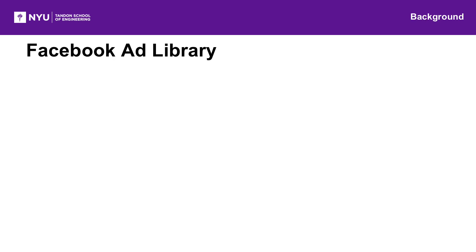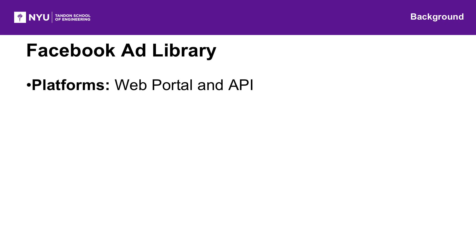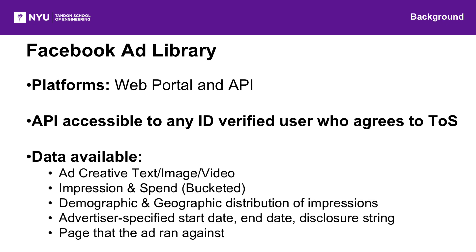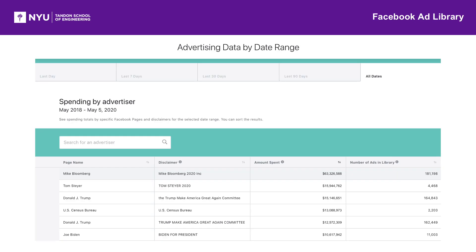In the Facebook ad library, ads are made available through both a web portal and an API. The API is accessible to any ID-verified user who agrees to the terms of service. For each ad, we can get the ad creative text, some bucketed data about impression and spend, as well as the demographic and geographic spread of the spend. We also get some metadata about when the ad ran, and the disclosure string and page that the ad ran against. Facebook also publishes an ad library report every day for several time periods with summary information about how much each page and disclosure string combination has spent and their total number of active ads.